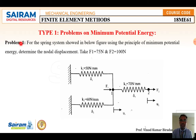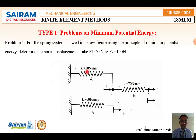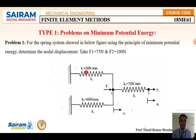Problem number one is based on minimum potential energy. For the spring system shown in the figure, using the principle of minimum potential energy, determine the nodal displacement. Take force F1 = 75 N and F2 = 100 N. There are three springs: k1 and k2 are connected in parallel, and k3 is in between. The stiffness values are k1 = 50 N/mm, k2 = 60 N/mm, and k3 = 70 N/mm.